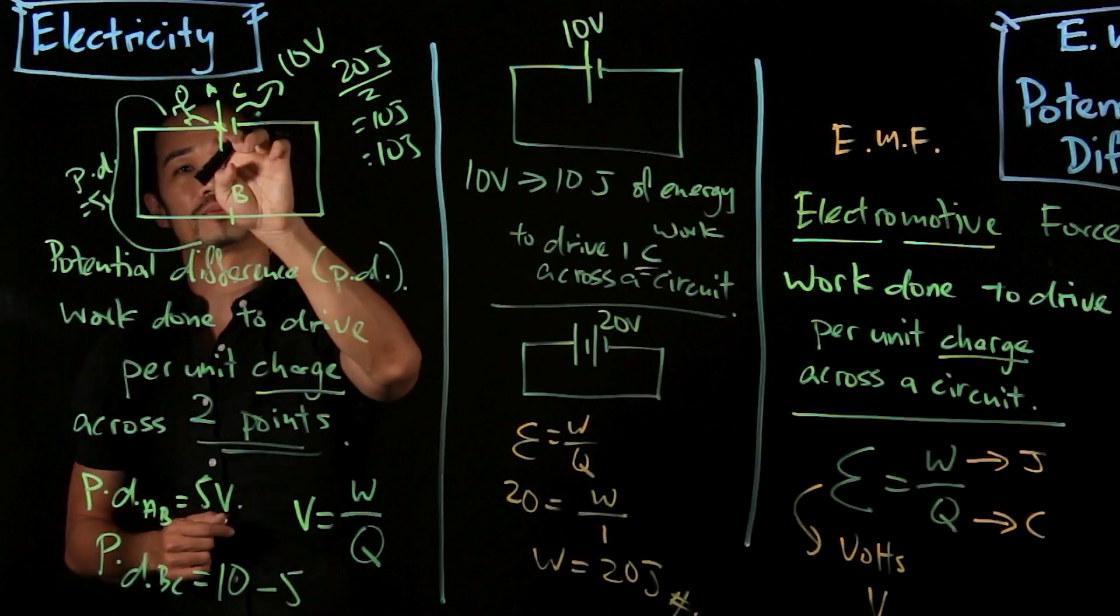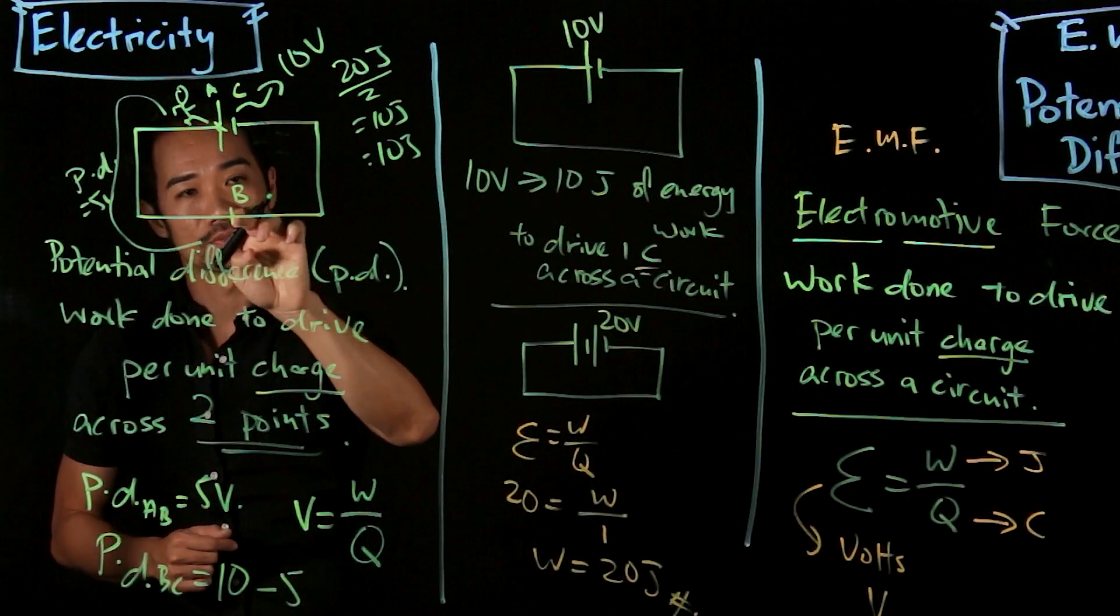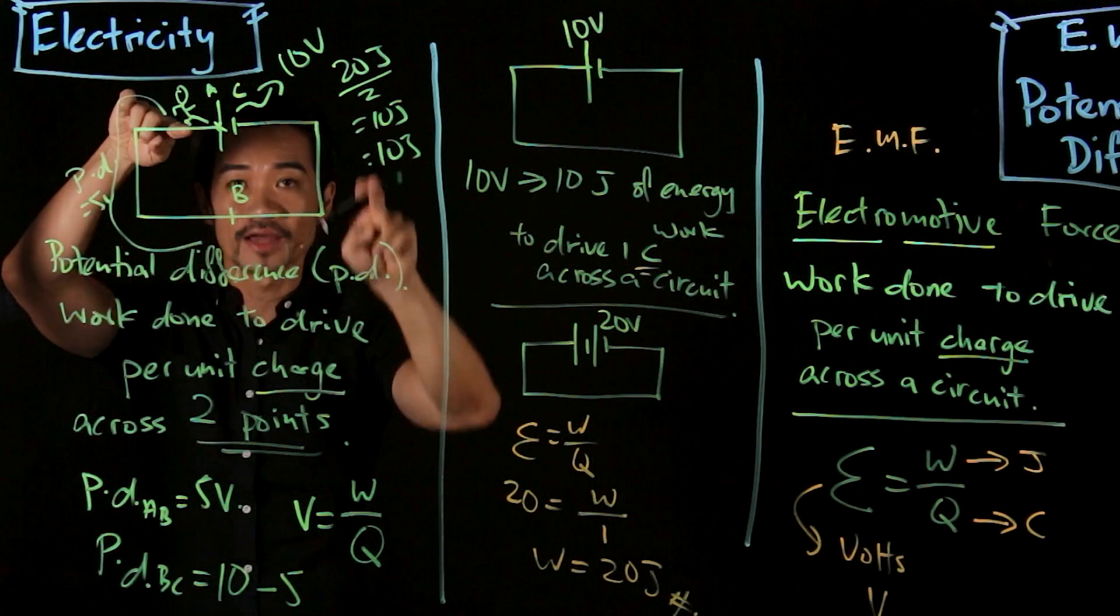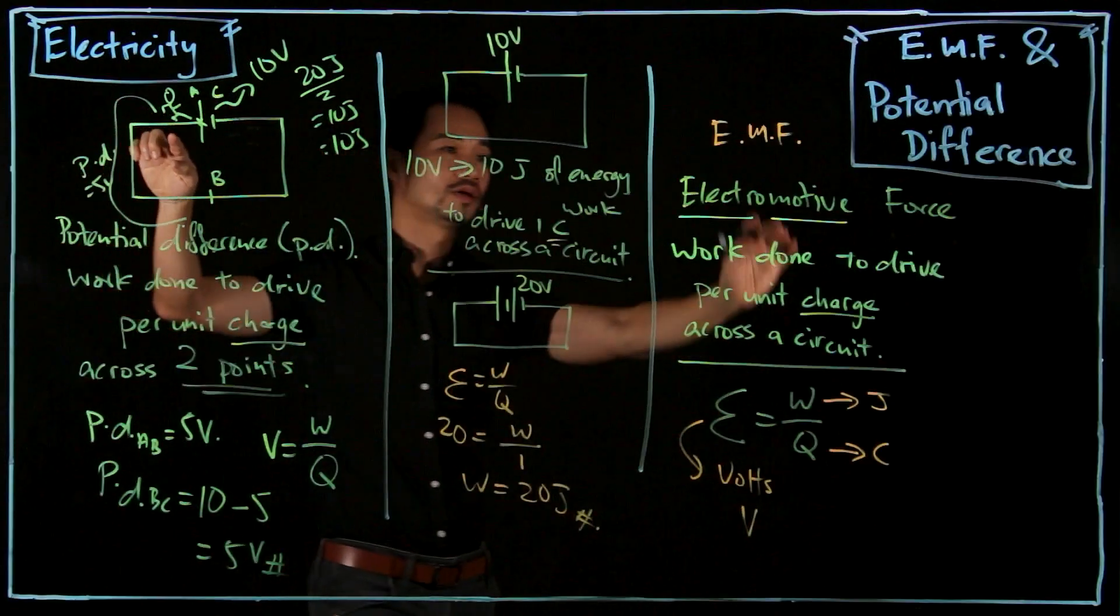Conversely, if you know the potential difference from here to here, and then from here to here, you add them together—which is the entire circuit—what do you get? You get EMF.